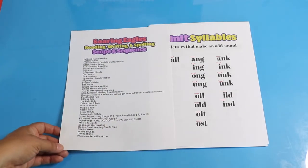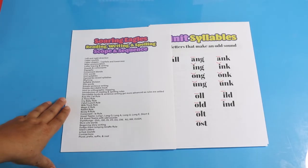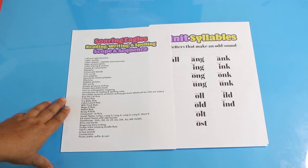First it goes over left and right direction. Then it will move on to letter sounds, then letter shapes with capital and lowercase, next letter pronunciation, then letter tracing and writing, vowels and consonants and the difference between those two, digraphs, consonant blends, CVC words, and then unit syllables.